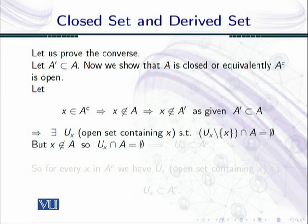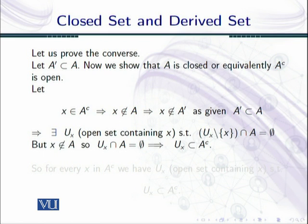So it means that agar main U_x minus x intersection A ki bajaye U_x intersection A bhi le lun to mere paas empty hi aayega, kyunki X, A mein nahi hai. Agar ek element set mein nahi hai to intersection mein se usko minus karun ya na karun, fark nahi padta. So U_x intersection A is equal to empty. But this implies that agar U_x ka intersection A ke saath empty hai, it means that U_x is a subset of A complement.